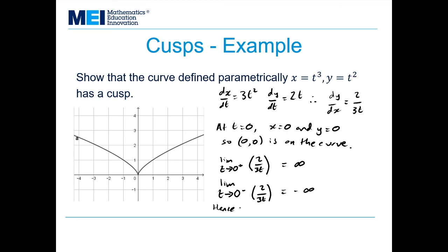Hence the gradient tends to the same limit. So we have that zero, zero is a cusp.